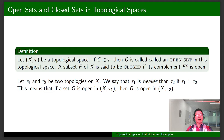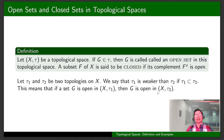Assume that τ₁ and τ₂ are two topologies on X. We say that τ₁ is weaker than τ₂ if τ₁ is a subset of τ₂. This means that if a set G is open in X with τ₁, then G is also open in X with τ₂.